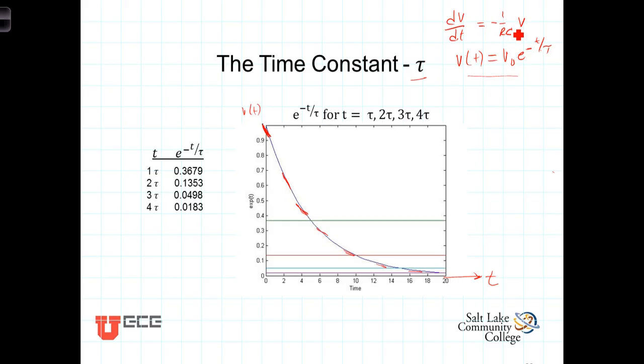Now, let's look at the effect of this value tau. It's the time constant. Tau has the units of seconds. It's a measure of how quickly the circuit responds. To understand that, let's evaluate e to the minus t over tau for values of t equaling 1 tau, 2 tau, 3 tau, and 4 tau.